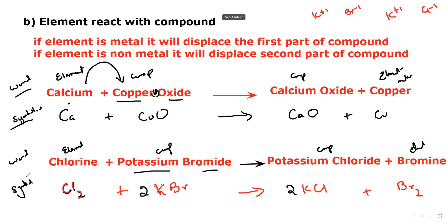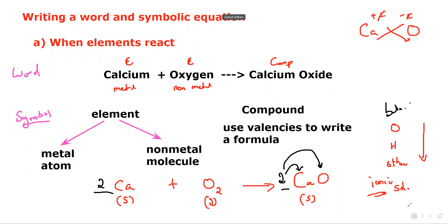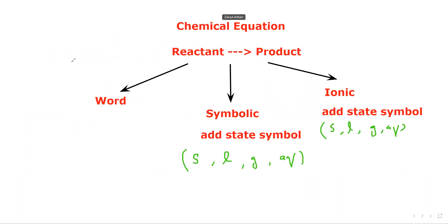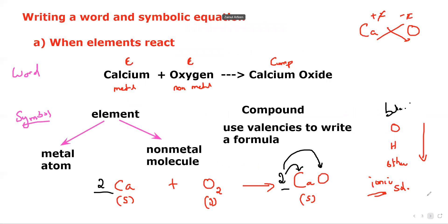Today we discussed how to write empirical formula and molecular formula, and we covered chemical equations — word equations and symbolic equations. Ionic equations will be covered after reaching chapter 8, where you will learn how to write them. Throughout the course, you will practice chemical equations further as they come up in different topics.